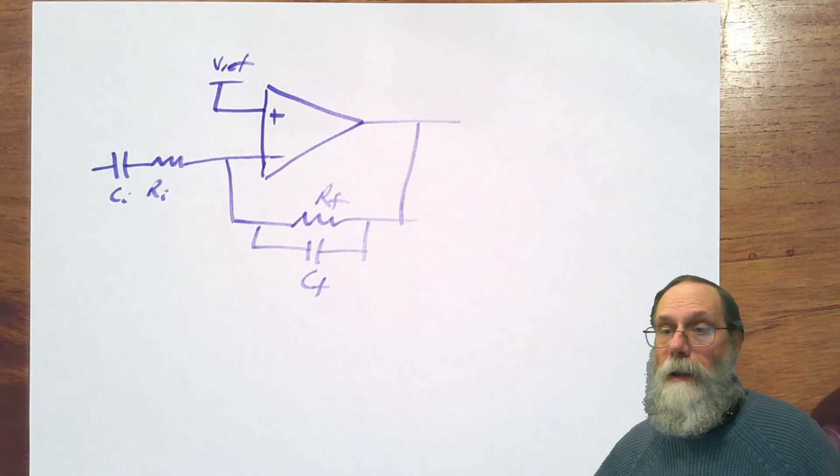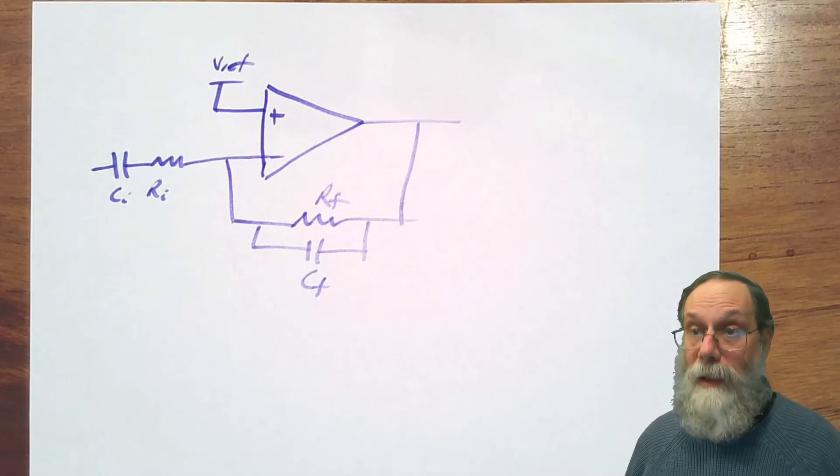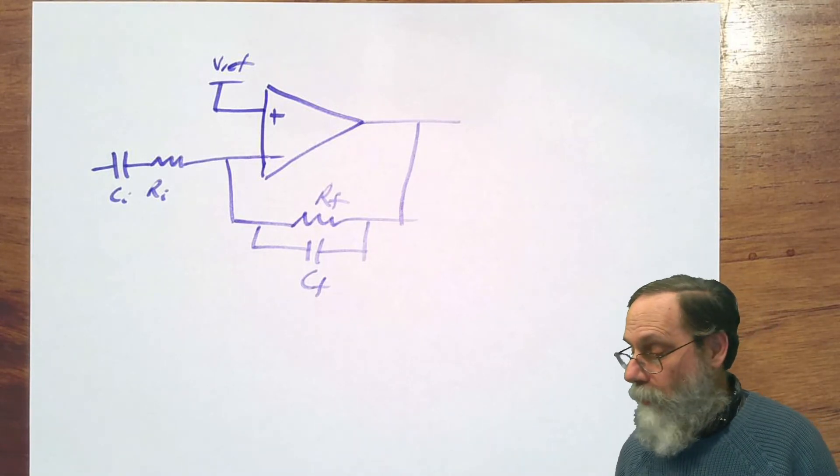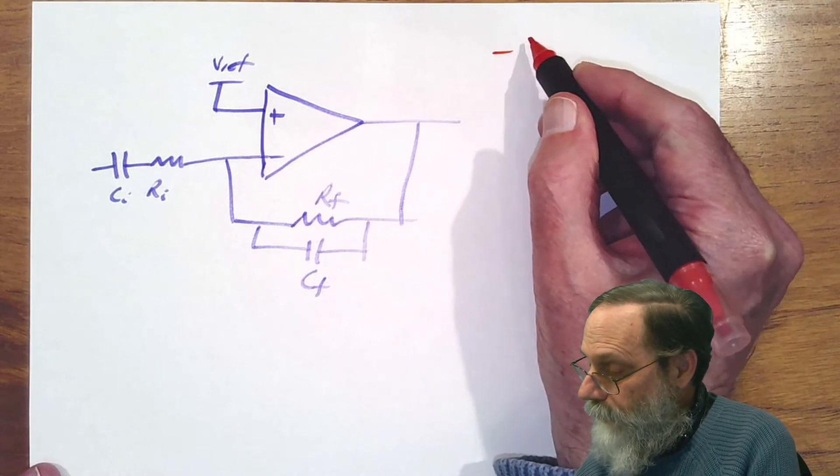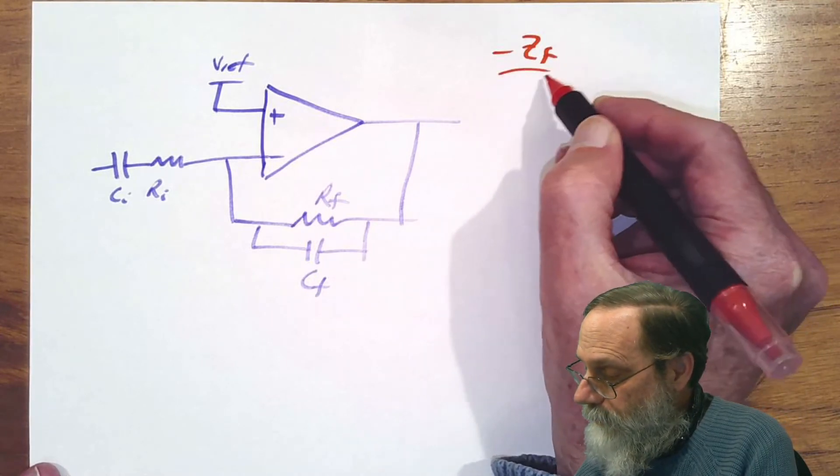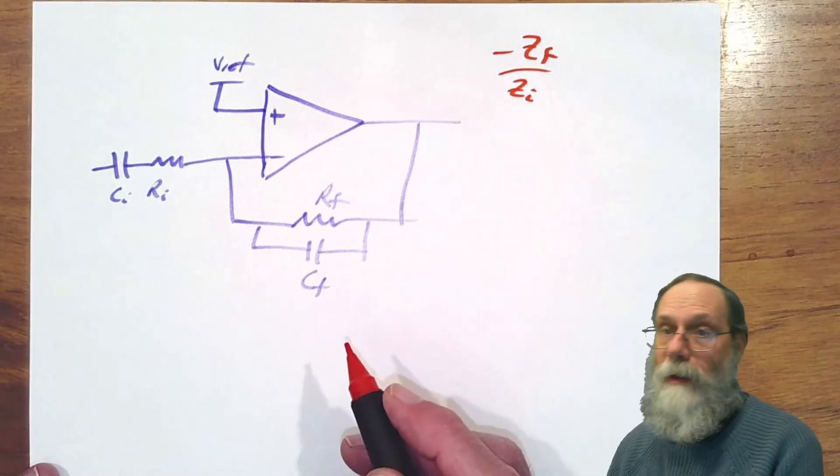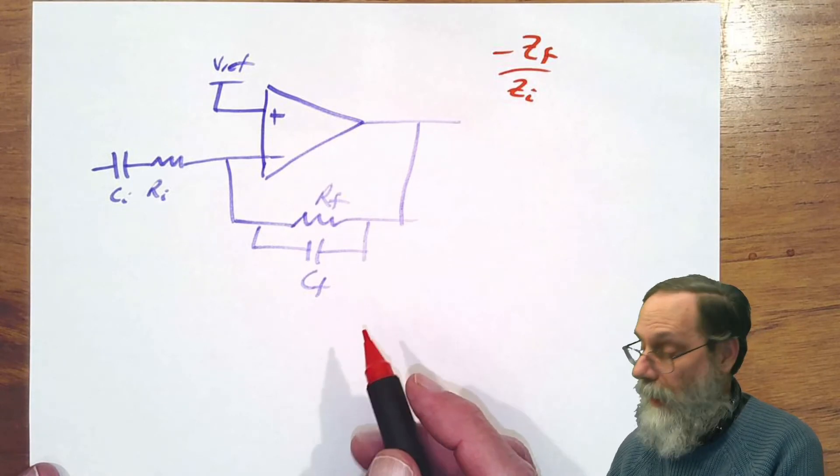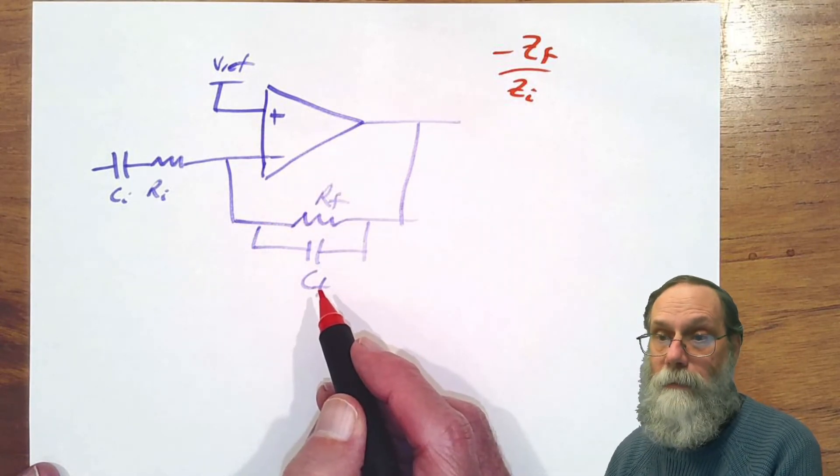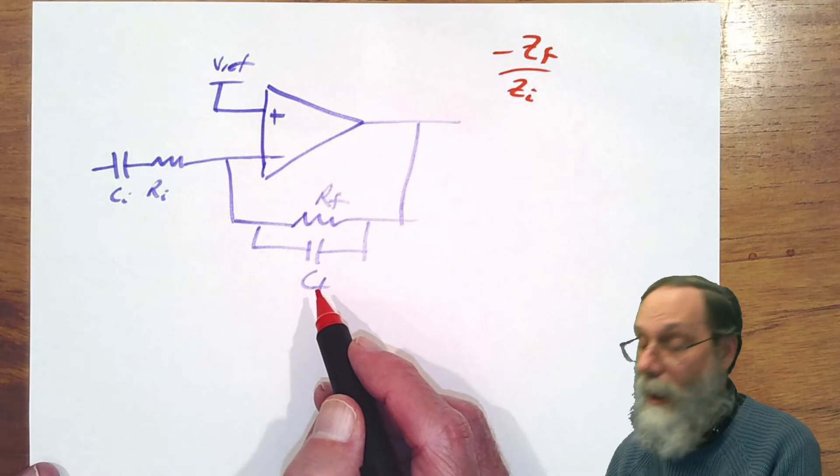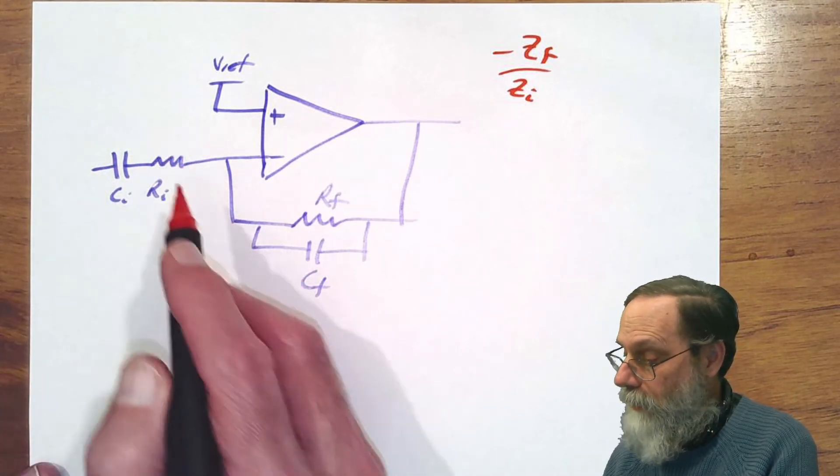Now we need to figure out what is the gain of this amplifier. The gain of an inverting amplifier is just a negative of Zf over Zi.